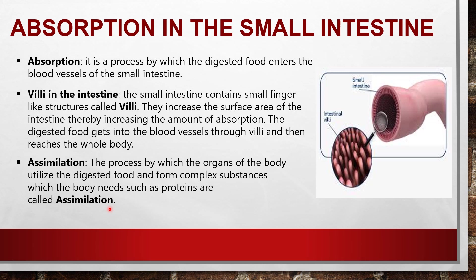In this lesson we studied four processes. The first process is ingestion — taking food into our body through the buccal cavity. The second process is digestion — breaking down of food. The third process is absorption — the digested food enters the blood vessels of the small intestine. The fourth process is assimilation — the digested food is utilized by the body to form complex substances such as proteins.